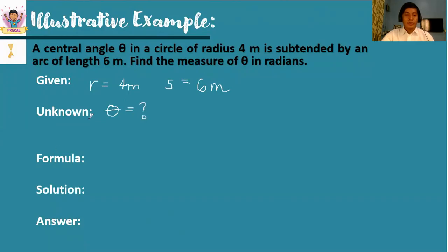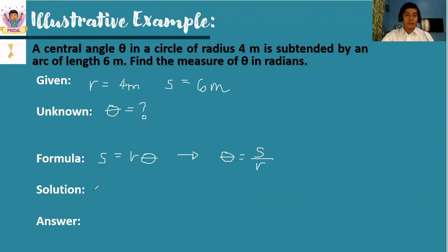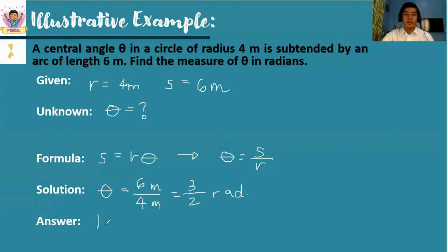For the formula, we need to transform it because our original formula is s is equal to r theta. To get theta, that is dividing s over r. For the solution, we have theta is equal to — substituting the values — s is 6 meters and r is 4. So that will be 3 halves radians. If you want to convert it into a decimal, that is equivalent to 1.5 radians. Do not forget the unit of measurement.